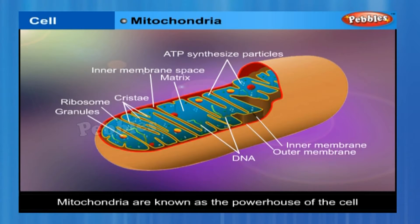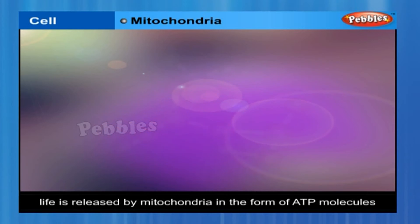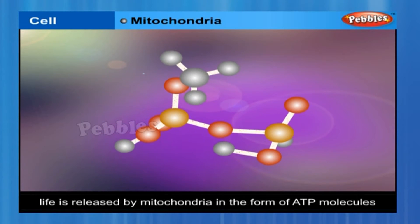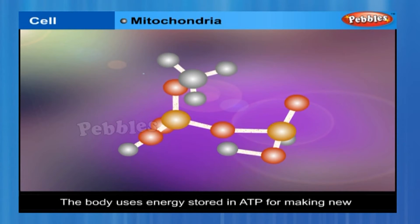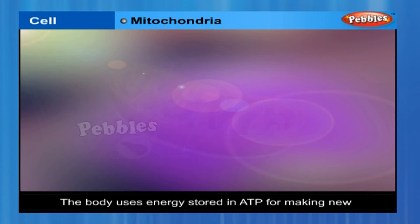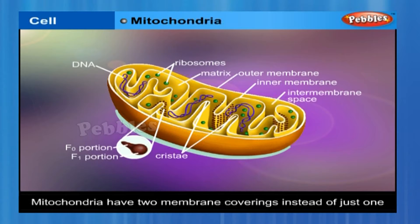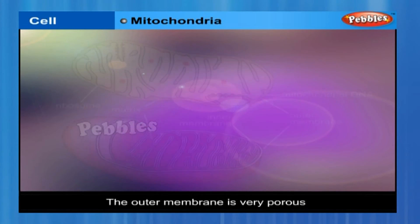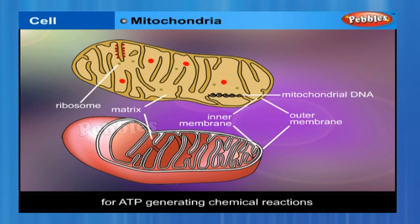Mitochondria are known as the powerhouse of the cell. The energy required for various chemical activities needed for life is released by mitochondria in the form of ATP — adenosine triphosphate molecules. The body uses energy stored in ATP for making new chemical compounds and for mechanical work. Mitochondria have two membrane coverings: the outer membrane is very porous while the inner membrane is deeply folded. These folds create a large surface area for ATP-generating chemical reactions.